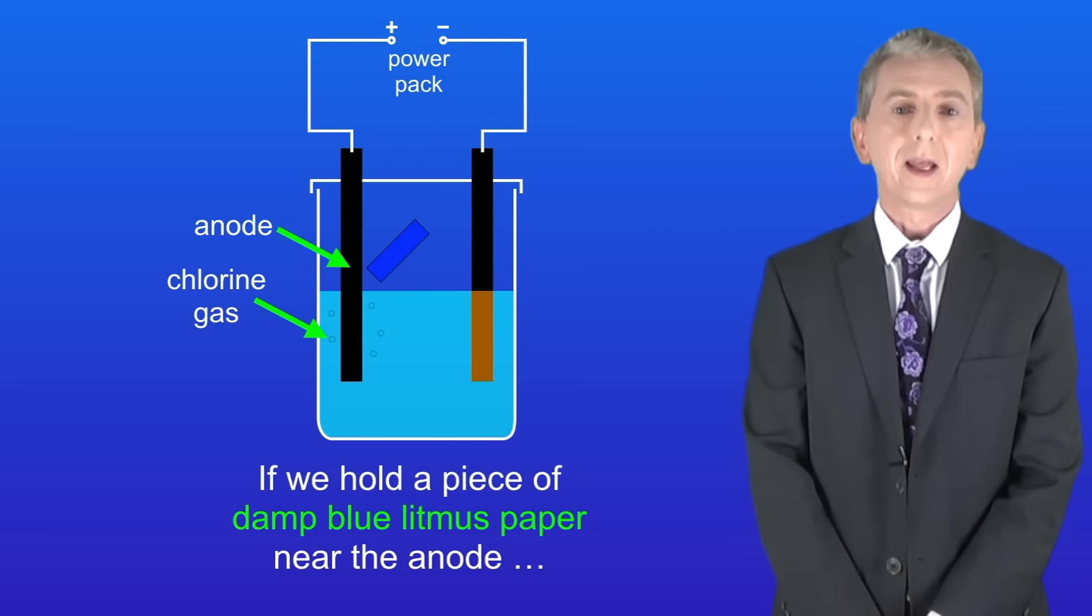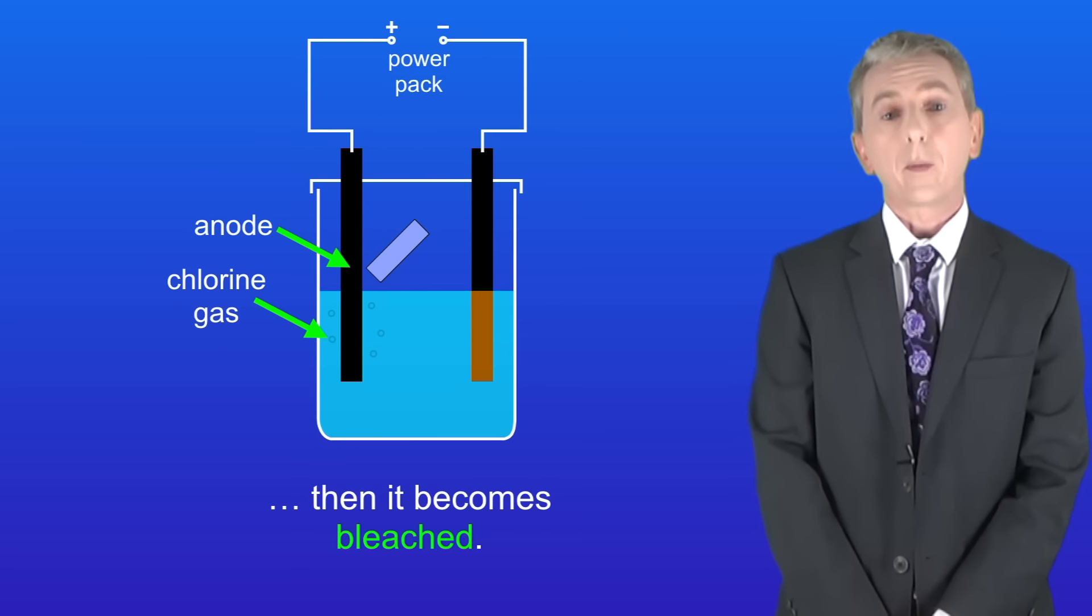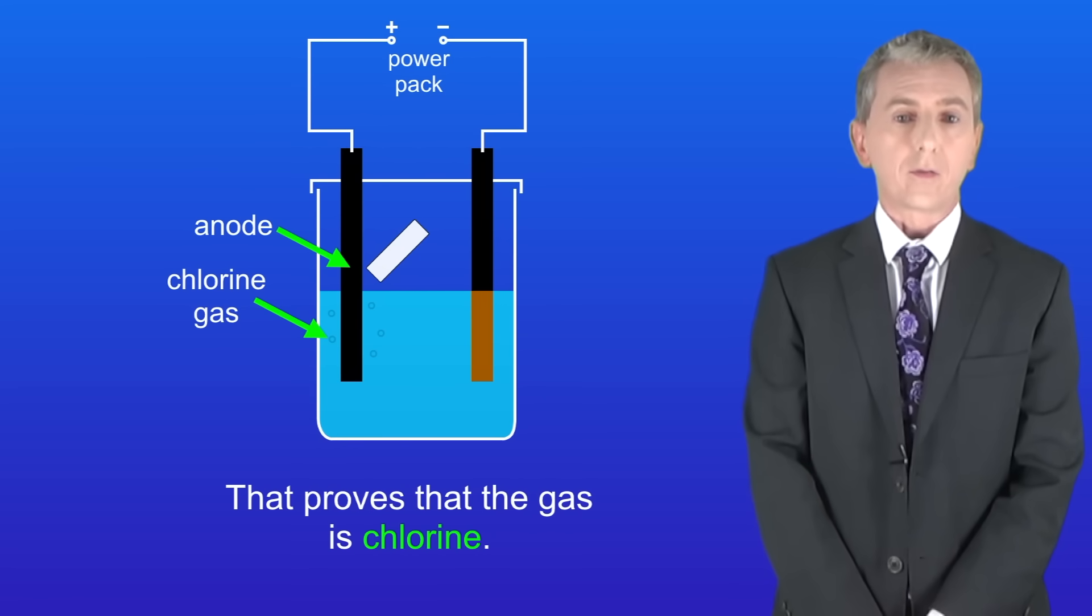If we hold a piece of damp blue litmus paper near the anode then it becomes bleached and that proves that the gas is chlorine.